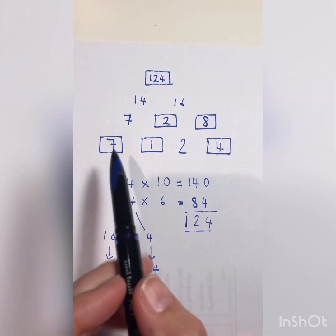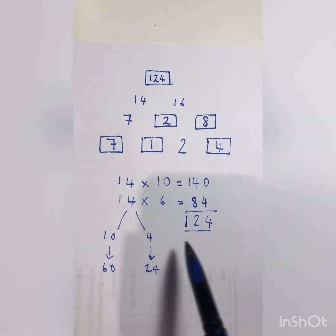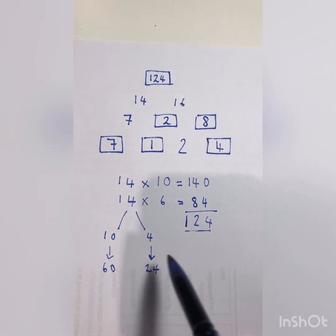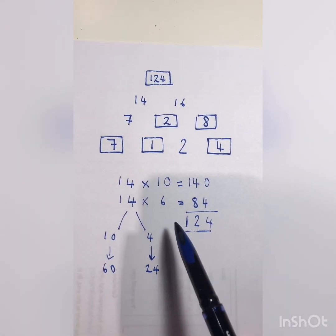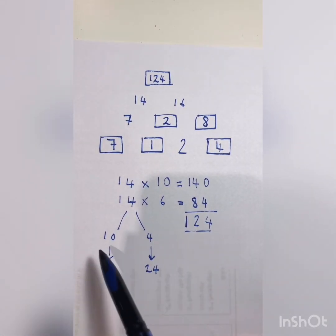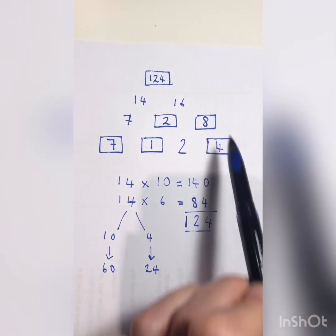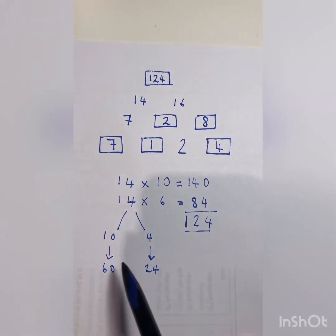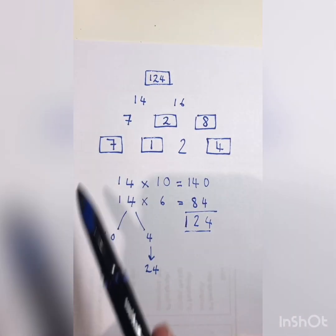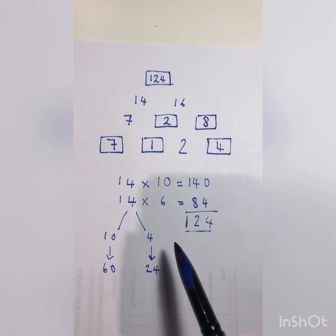So that's the next level — it took me a bit longer and there was a bit more working out. There are different ways to do this, but this is the way where you can use your place value and your times table knowledge all in one go.